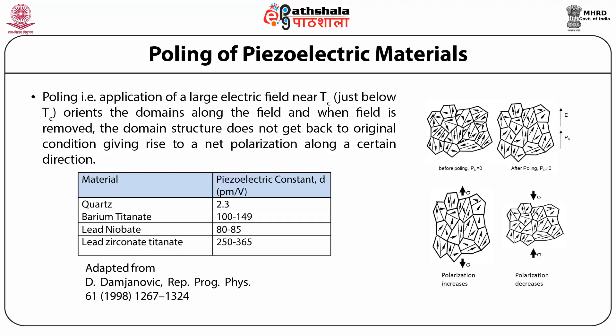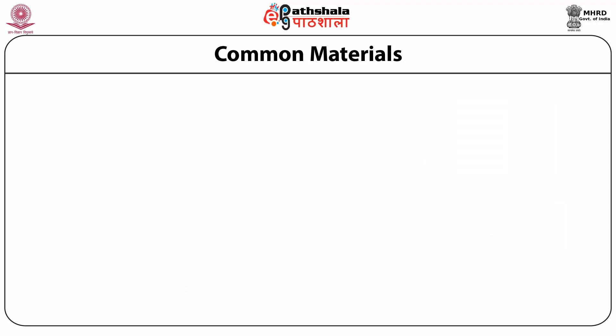Before polling, where the remnant polarization PR is zero, the domains are randomly oriented and the net polarization is zero. After polling, when the resultant polarization is not zero, the applied electric field has aligned the domains in its direction, resulting in some value of net polarization. The polarization can increase or decrease depending on the direction of the applied electric field.